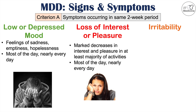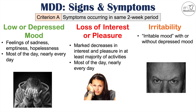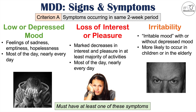Irritability is also a related symptom — an irritable mood that can occur with or without depressed mood. This irritable mood is more likely to occur in children or the elderly, as depression can present differently in these patients. In order to say a patient has major depressive disorder, they must have at least one of these symptoms: either a low or depressed mood (or irritable mood) or a loss of interest or pleasure. They could just have loss of interest or pleasure and may still have major depressive disorder, pending other signs and symptoms.